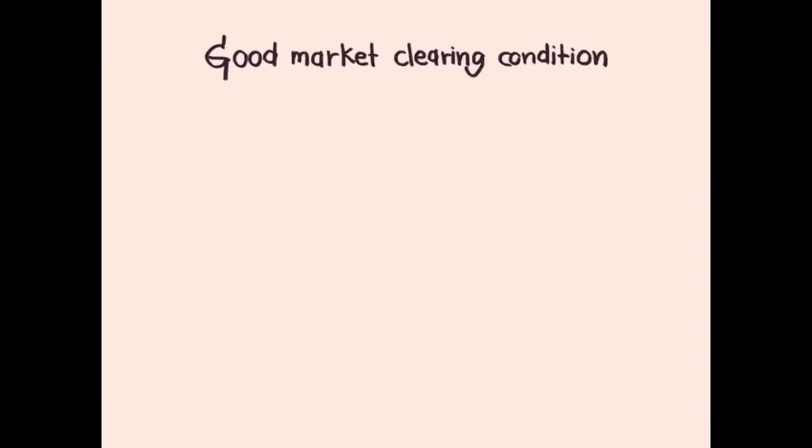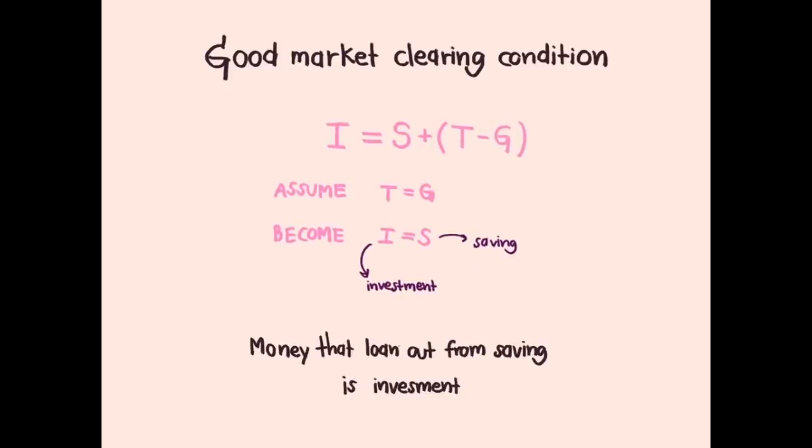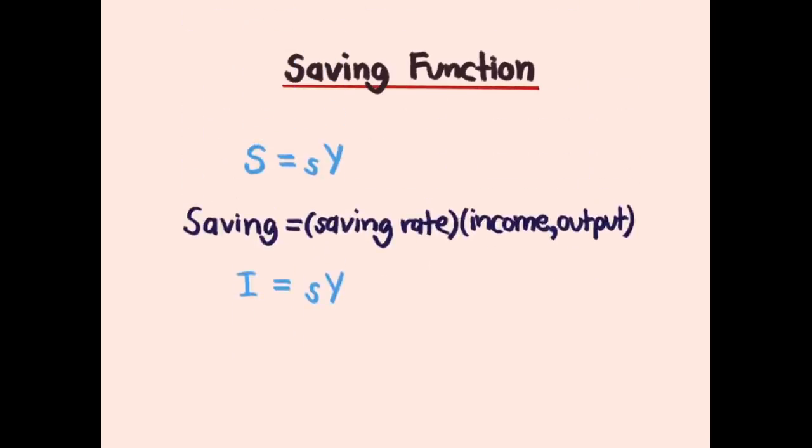At the market equilibrium, investment will equal saving. At this point, we will assume that tax equals government spending to let them cancel out and allow investment to equal saving. From the goods market clearing condition, investment equals saving. Saving also has a saving function which is saving equals saving rate multiplied by income or output. That means investment equals saving rate multiplied by income or output too.